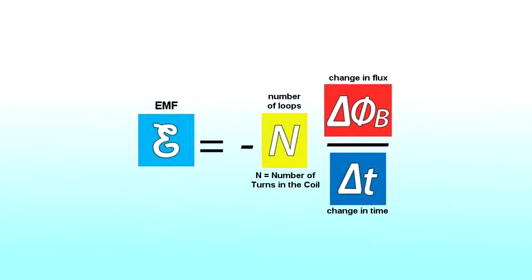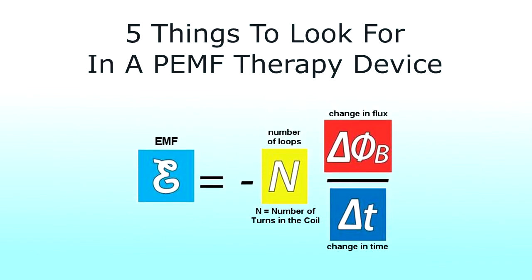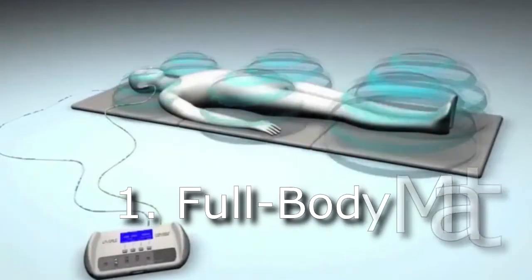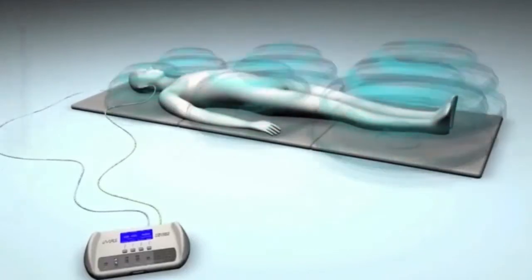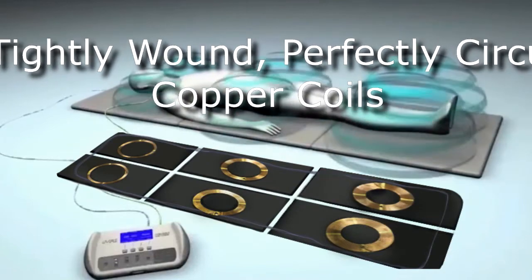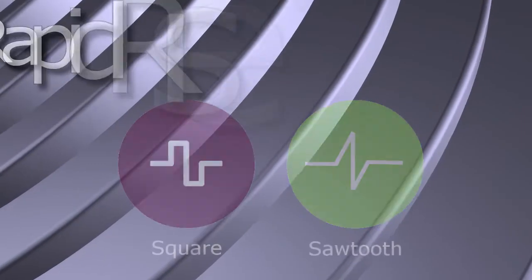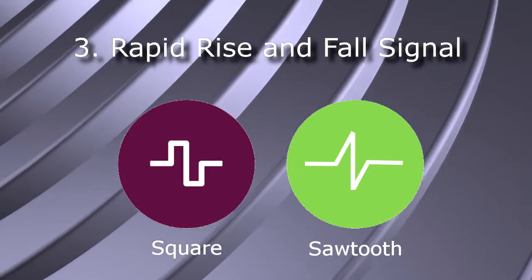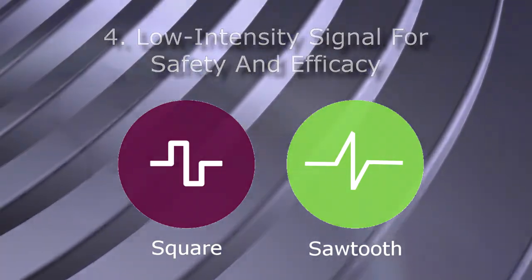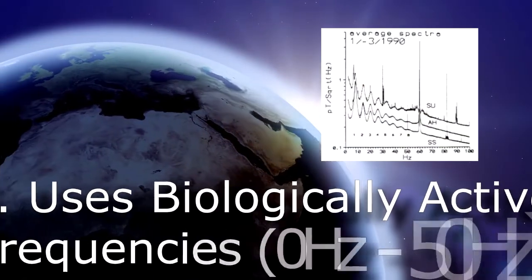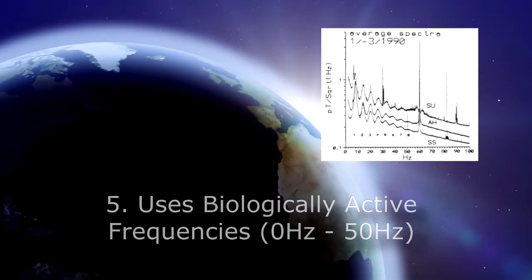In conclusion, based on what we've learned about Faraday's law of induction, here are five things to look for in a PEMF therapy device. Number one: get a full body mat device to cover your whole body and energize all 37 trillion cells. Number two: make sure the unit has tightly wound, perfectly circular copper coils — many turns in the coil helps even more. Number three: make sure it uses a rapid rise-and-fall signal like a sawtooth or square wave. Number four: make sure it has lower intensities for safety and efficacy. Number five: make sure it uses biologically active frequencies in the zero to 50 hertz range, which we'll discuss more in the next module.